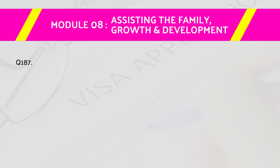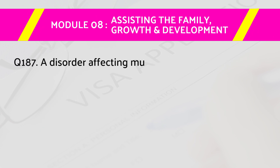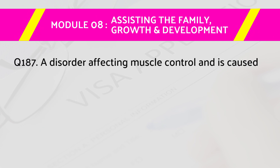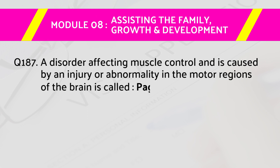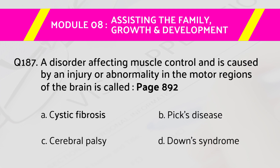Question number 187: A disorder affecting muscle control caused by an injury or abnormality in the motor regions of the brain is called — page number 892. Answers are: A) cystic fibrosis, B) Pick's disease, C) cerebral palsy, D) Down syndrome. The right answer is C, cerebral palsy.